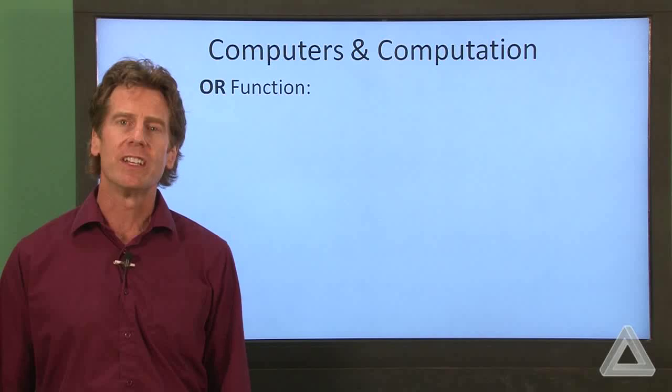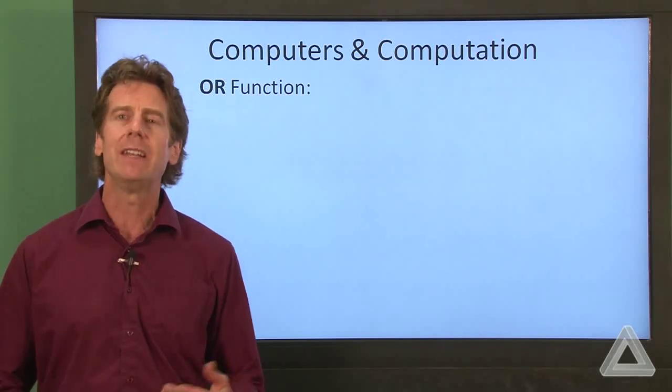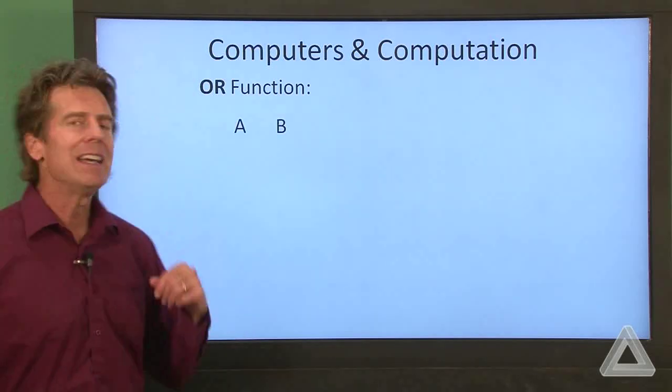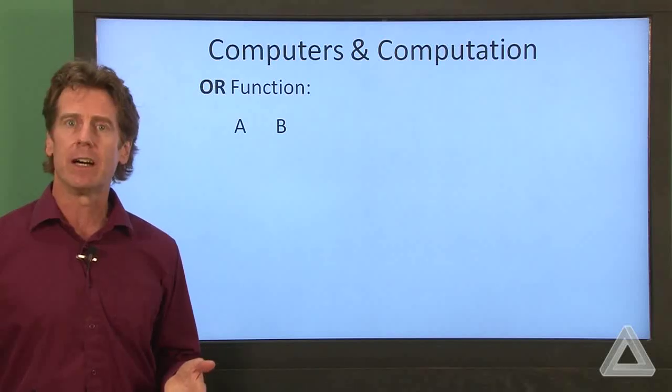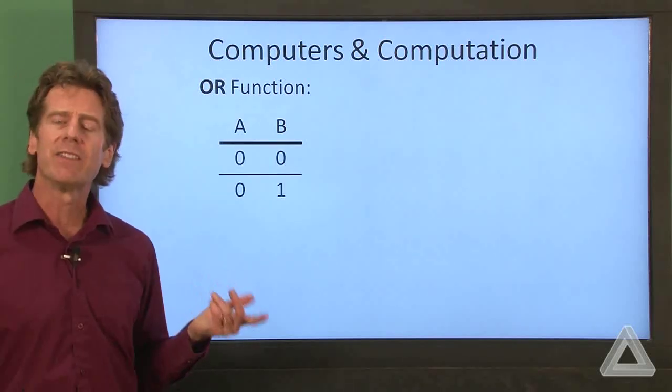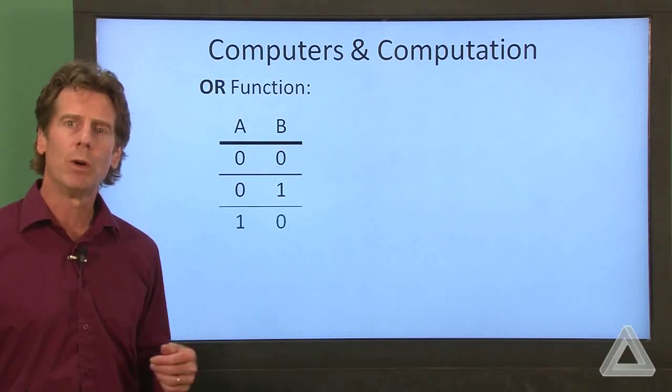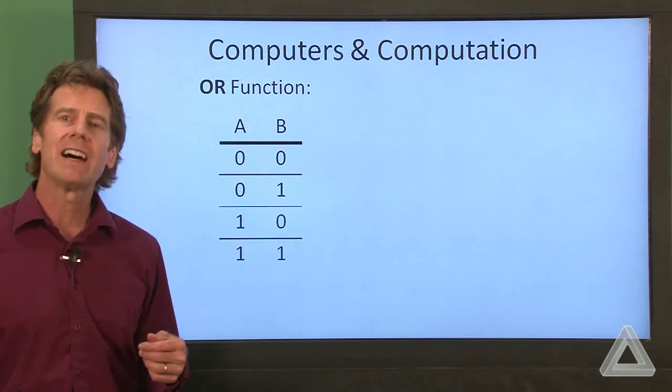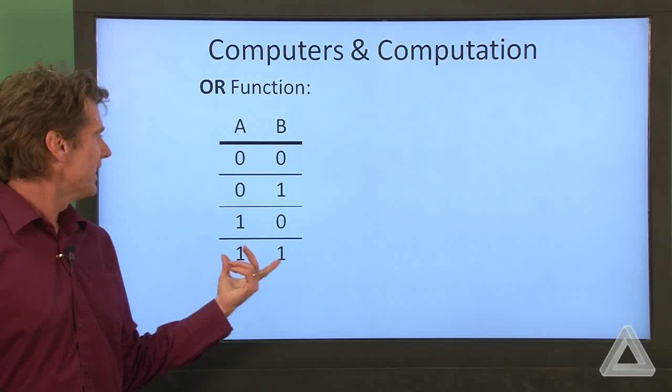Let's start with the OR function and we have two input bits. Let's call them A and B and consider the various combinations we could have. They could both be zero, we could have zero and one, we could have one and zero, and we could have one and one.